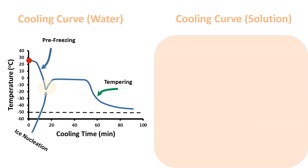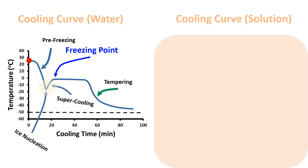We could observe unstable ice formation during supercooling before an equilibrium stage at the freezing point. The sudden jump at ice nucleation has been explained by the physics in an earlier video on the freezing process as described by the cooling curve.